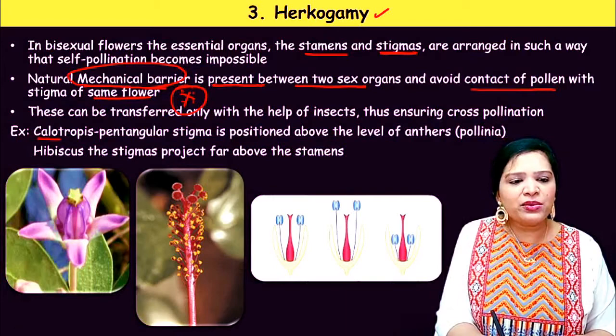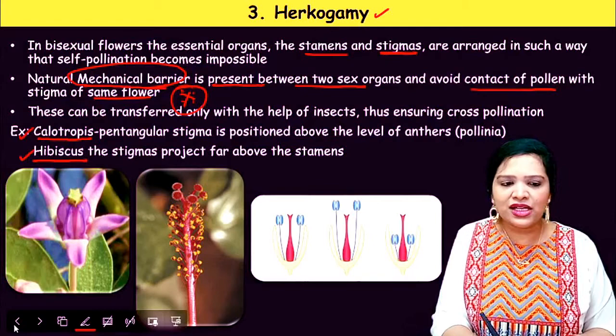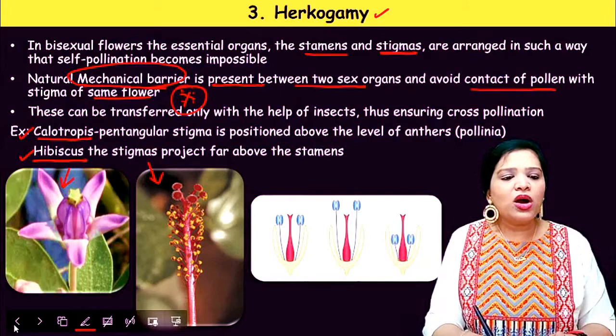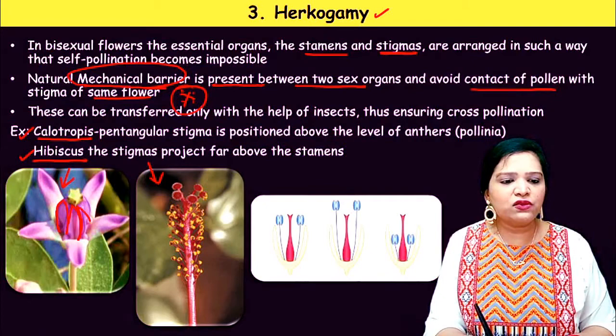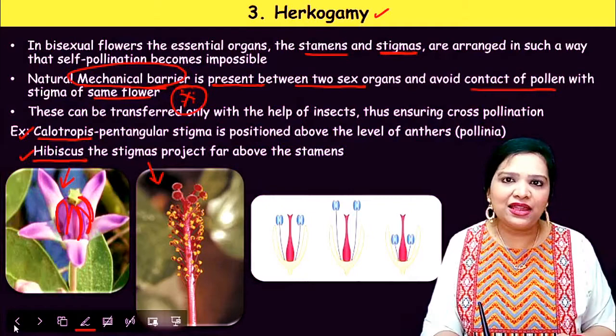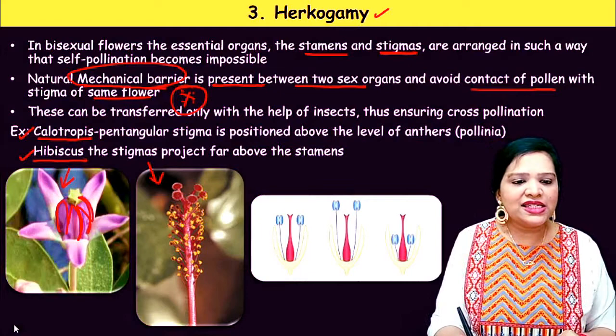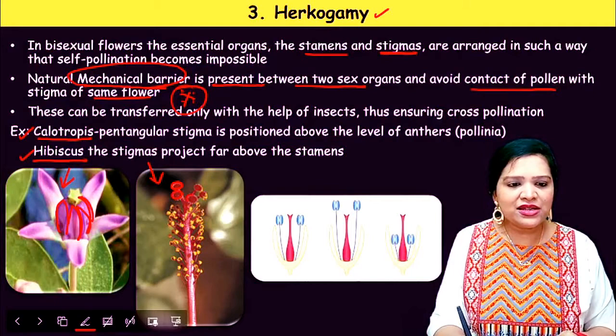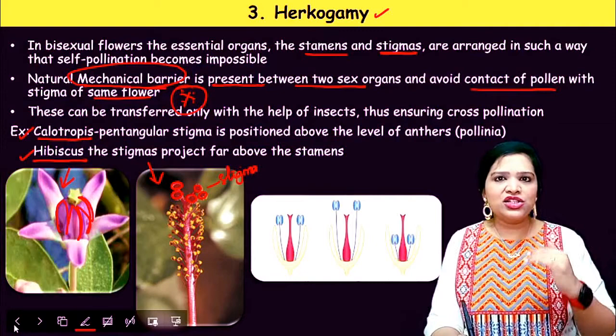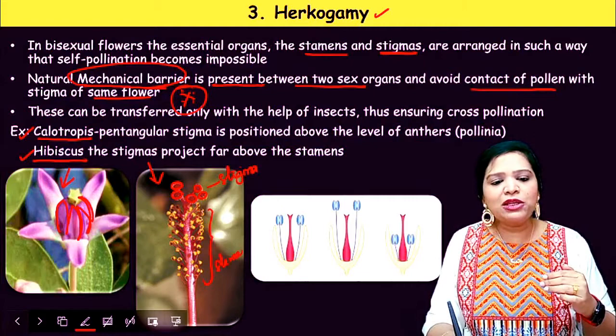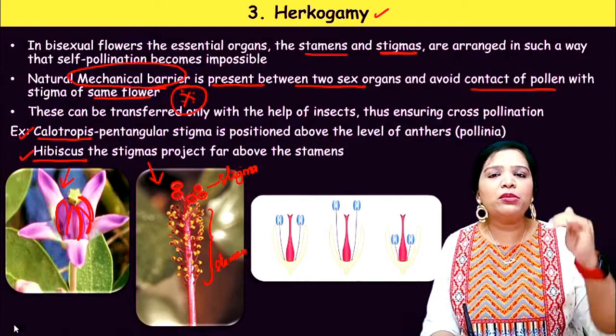Important examples of hercogamy are Calotropis and Hibiscus. In Calotropis, the pentagonal stigma is positioned above the level of the anther. In Hibiscus, the stigma is above while the stamen is below — whenever the stamen releases pollen grains, the female part is higher and the pollen cannot reach it, so cross-pollination occurs and self-pollination is prevented.